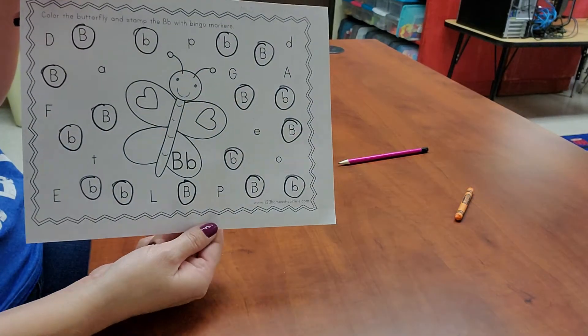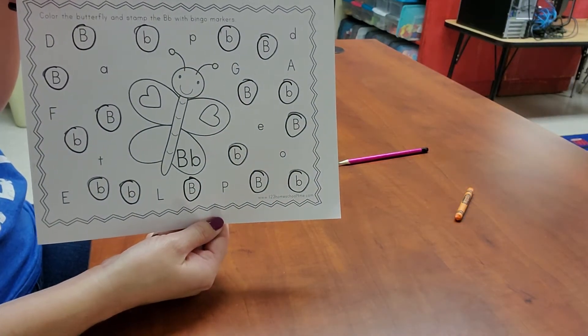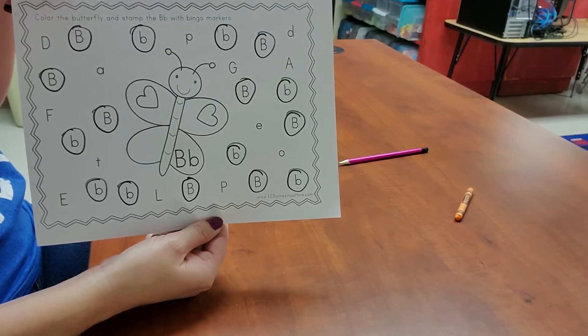And there you go. Just like that, we are all done circling all our uppercase and lowercase Bs.